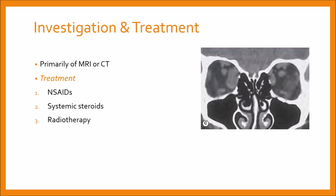Investigations consist primarily of MRI and CT, which show enlargement of the affected muscles. On the CT scan, you can see enlargement of the medial rectus in the right eye. This is in contrast to thyroid eye disease-related muscle enlargement, in which the tendon is always spared. Additional investigations may be required in some cases.